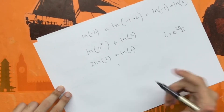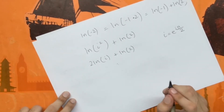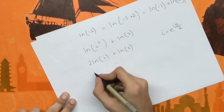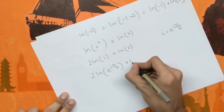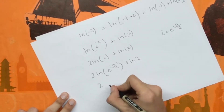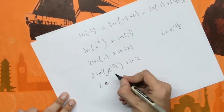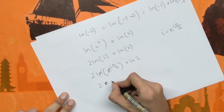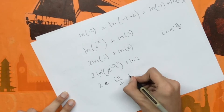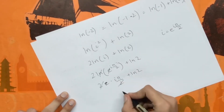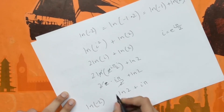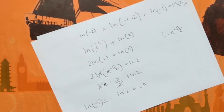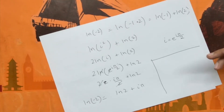Using Euler's formula, we can write i as e to the power i·π/2. Substituting this in, we have the natural log of e to the power i·π/2, plus the natural log of 2. The natural log and e cancel out, so we're left with 2 times i·π/2 plus the natural log of 2. This gives us our answer for the natural log of a negative number, assuming we can take values to the complex plane.